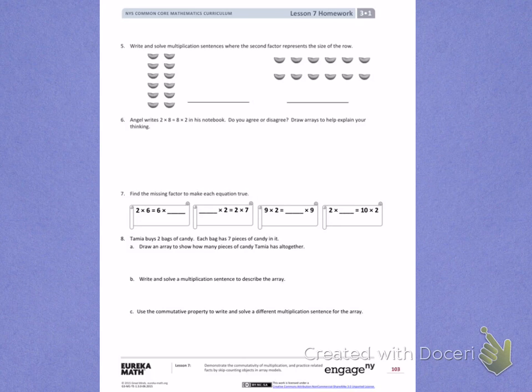When I look at the first problem, I'm going to count my rows to start. 1, 2, 3, 4, 5, 6. I have 6 rows.